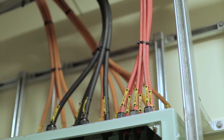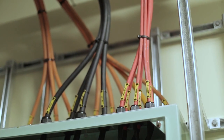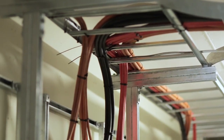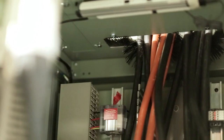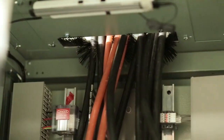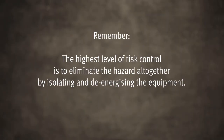A quick visual indicator of the potential fault current can be as simple as identifying the physical location of the supply transformer. Remember, the highest level of risk control is to eliminate the hazard altogether by isolating and de-energising the equipment.